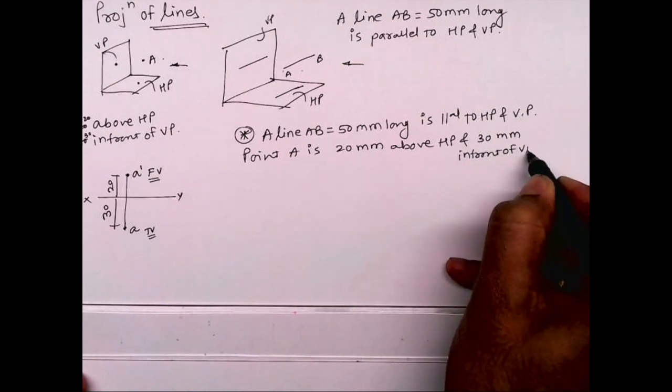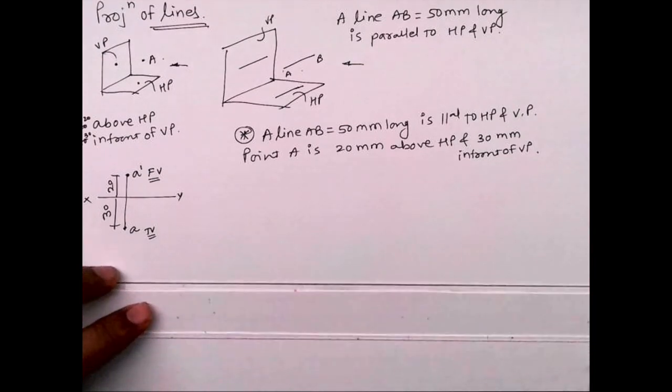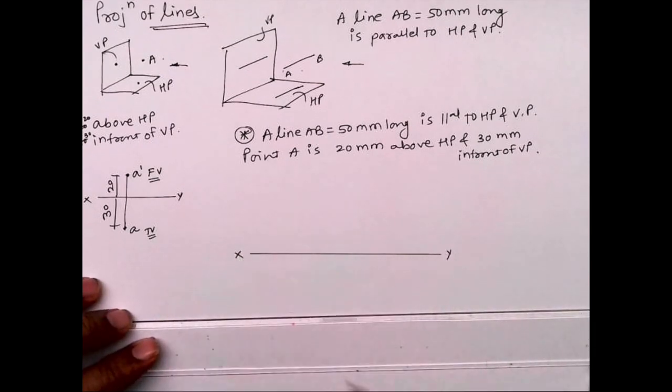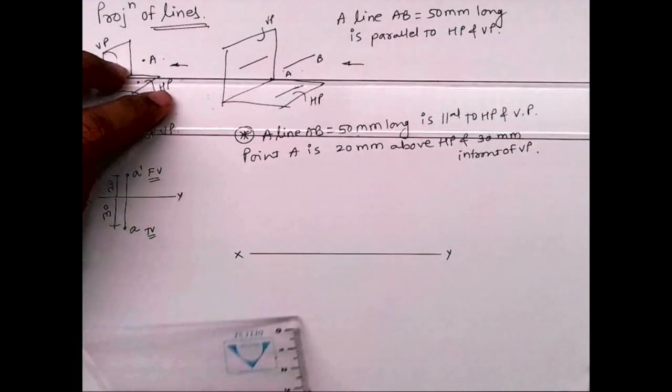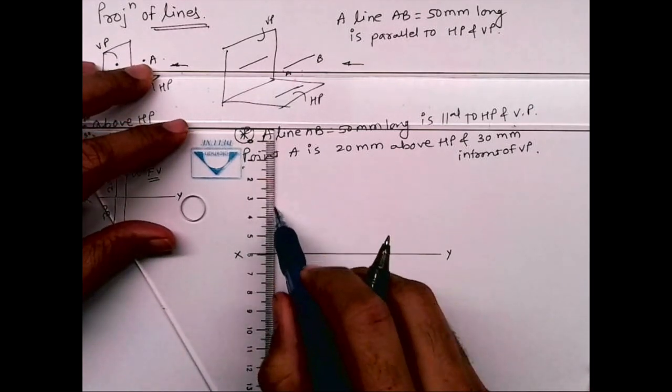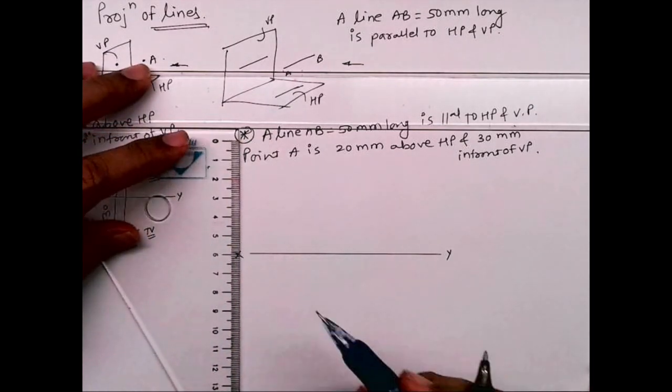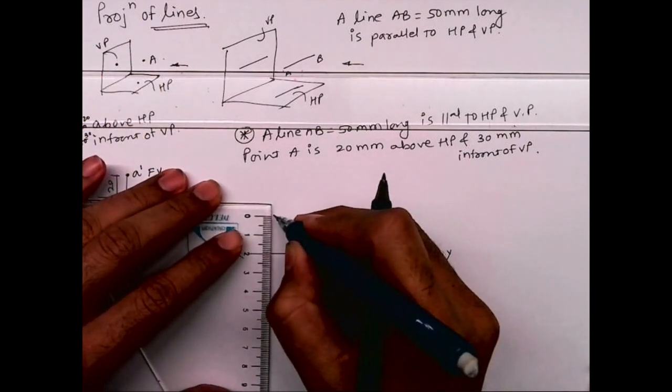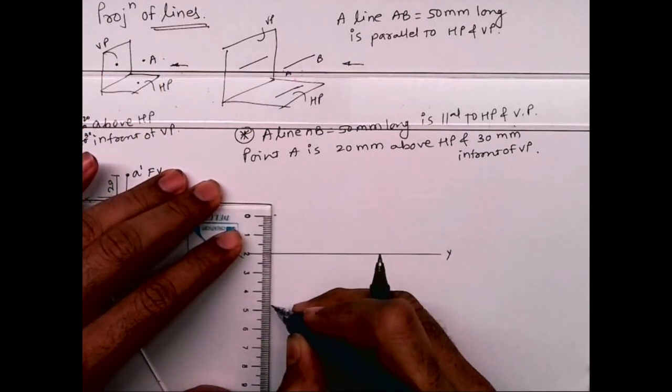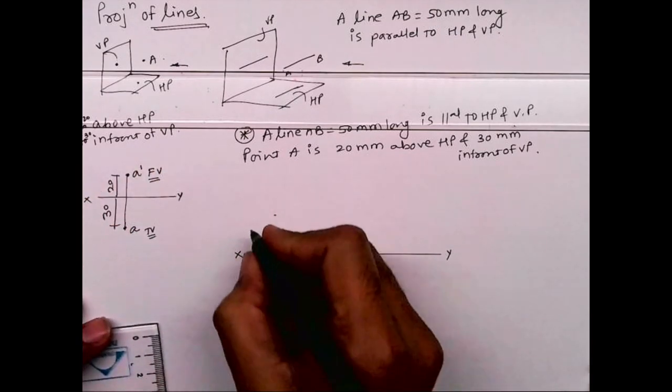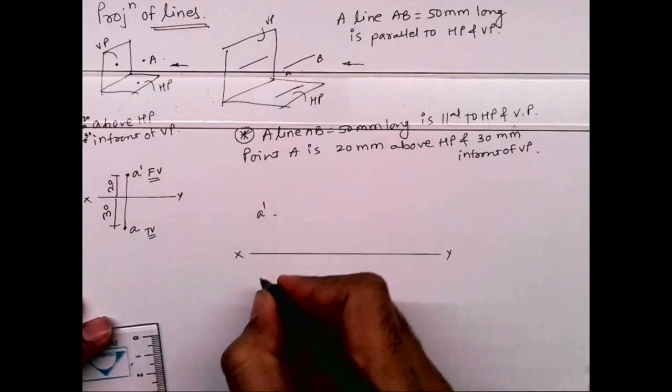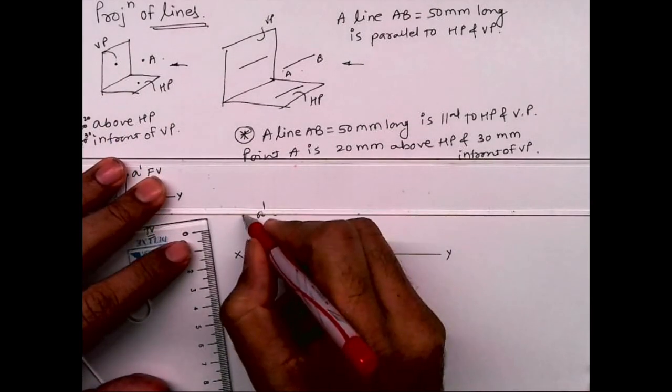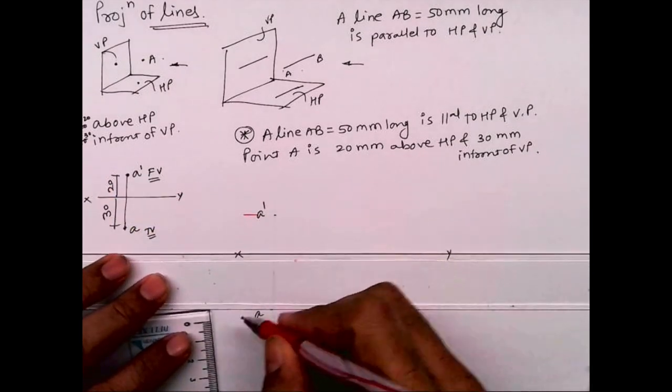So if you see, this is how they will ask you in an exam. This is generally for technical drawing student or engineering drawing student. Now see this. First you will draw line XY. Line AB 50 mm long, so first we will always mark the point. Over here they have said point A is 20 mm above HP and 30 mm in front of VP. So you draw one line, mark 20 above XY line and 30 below XY line.